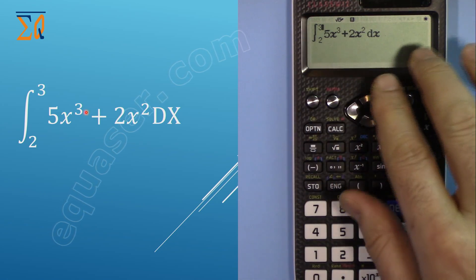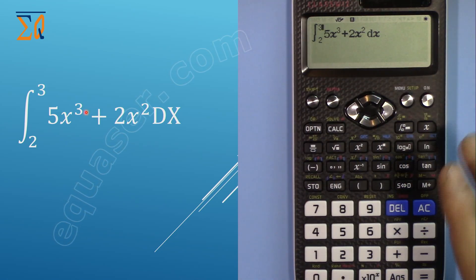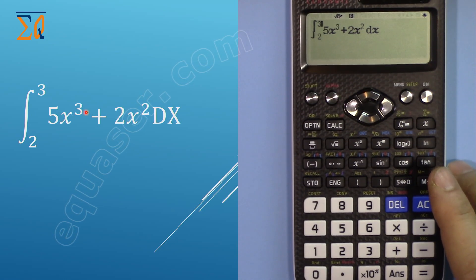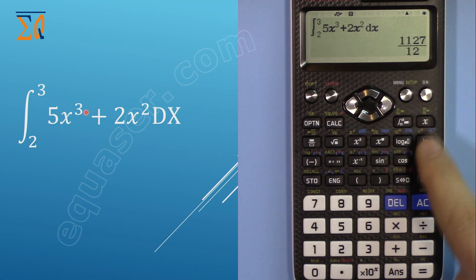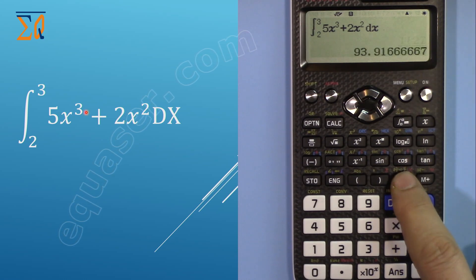Now I'm entering 2, then move to the right. The bound moves up, so enter 3. The function on the screen looks exactly like the textbook, which is the beauty of this calculator. Press equal and the answer is this fraction. If you don't like the fraction, press the F⇔D button to get 93.9166. That was evaluating an integral with a regular function.